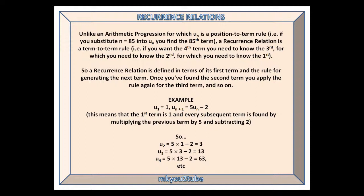So a recurrence relation is defined in terms of its first term and the rule for generating the next term. Once you've found the second term, you apply the rule again for the third term, and so on.